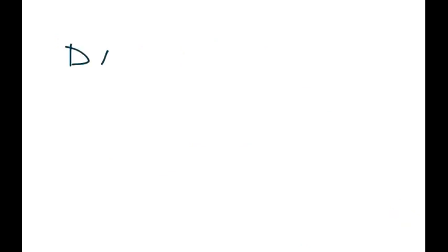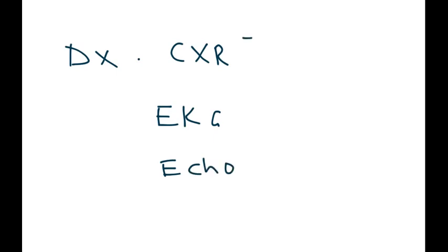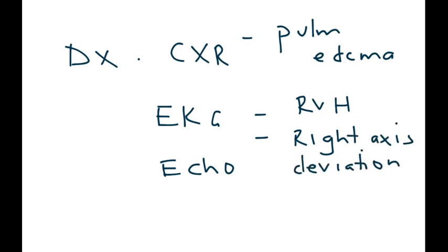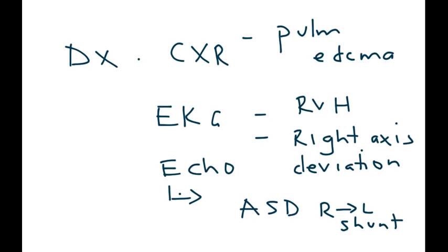Diagnosis of TAPVR is done with a chest X-ray, EKG, and echocardiogram. The chest X-ray will show pulmonary edema. The EKG will show right ventricular hypertrophy and right axis deviation, which is a direct consequence of right ventricular hypertrophy. The echocardiogram will show the ASD — that important opening allowing the right-to-left shunt — and will also show right atrial enlargement and right ventricular hypertrophy.